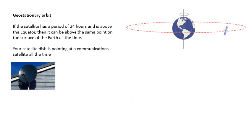The other important orbit is the geostationary orbit. If a satellite has a period of exactly 24 hours and orbits above the equator, it remains above the same point on the Earth at all times. This is obviously very useful for communication satellites — your satellite dish points at one fixed point in the sky. It must be above the equator because the centre of the orbit must be the centre of the Earth.